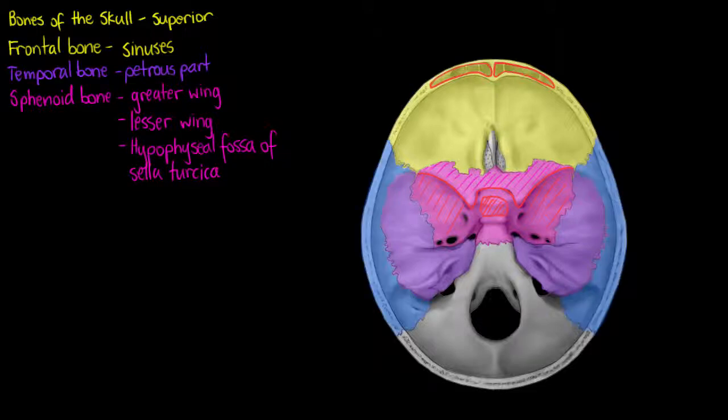The next bone we're going to see here is our parietal bone. I've just highlighted the parietal bone here in blue, being the most lateral of the bones of our cranium.